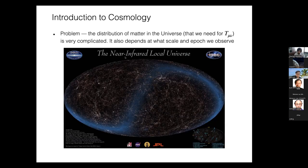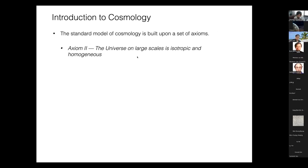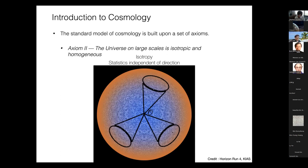The energy-momentum tensor associated with the matter distribution in the universe is very complicated. To make progress on solving the Einstein equations, we make the assumption that on large scales — of order hundreds of megaparsecs — the universe is statistically isotropic and homogeneous. Isotropy means that statistical quantities measured in any direction on the sky should be statistically consistent, regardless of where you point your telescope.